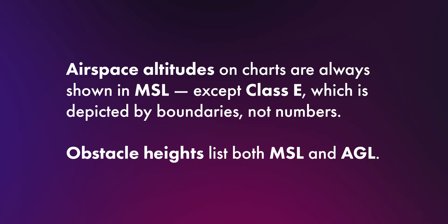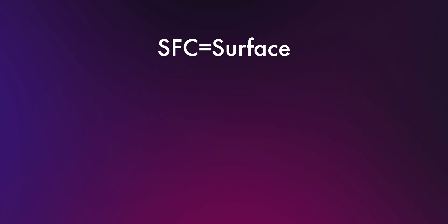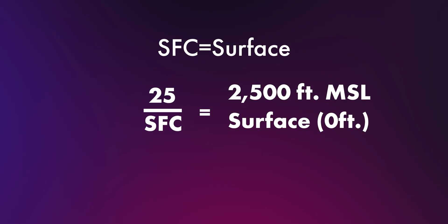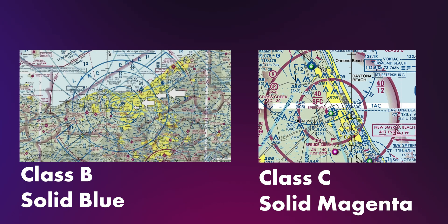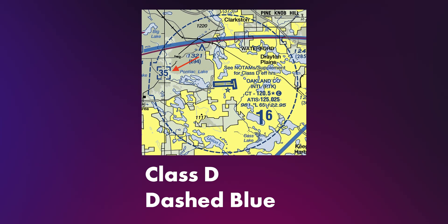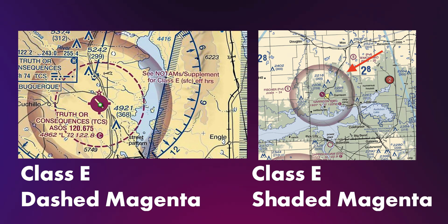Obstacle heights list both MSL and AGL. Remember that SFC equals surface, so 25 slash SFC means 0 feet to 2,500 feet MSL. Class B is blue, Class C is magenta, Class D is dashed blue, and Class E is magenta — either dashed or shaded.